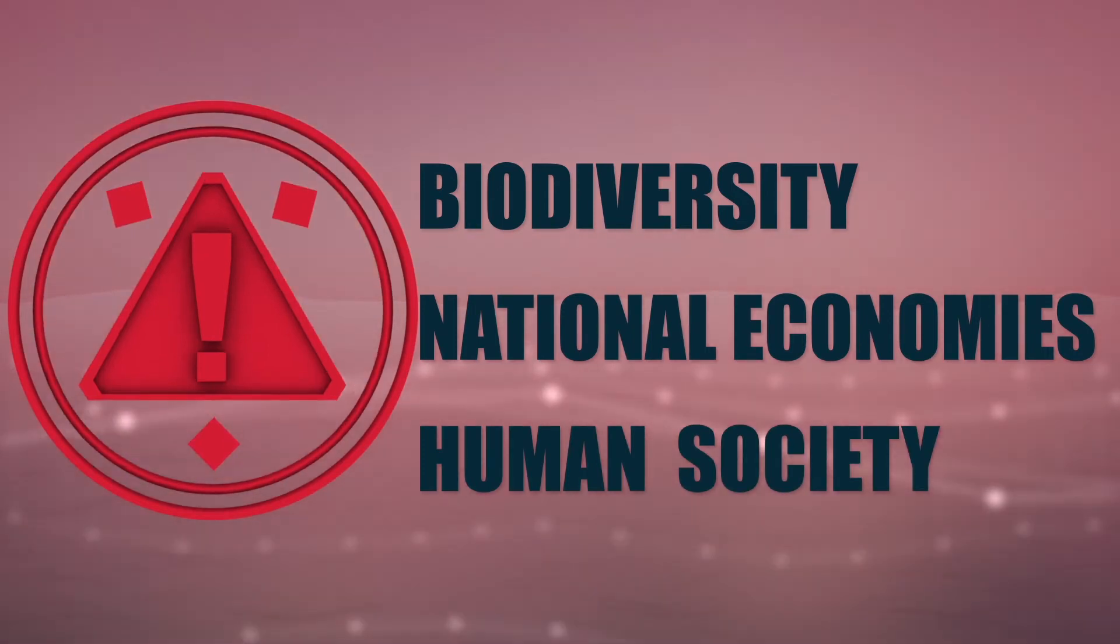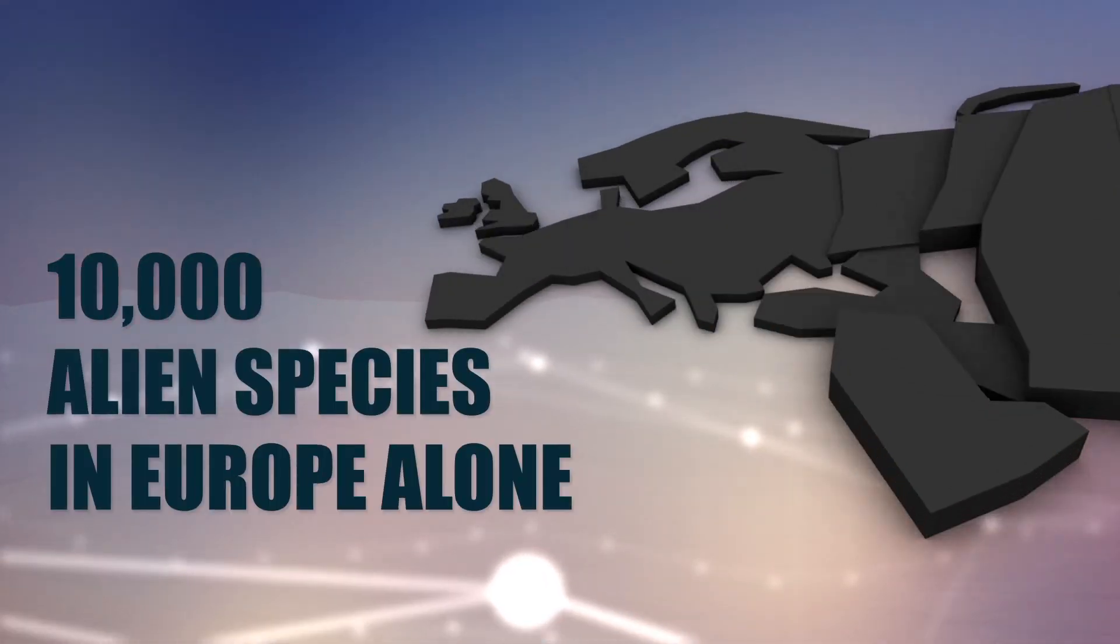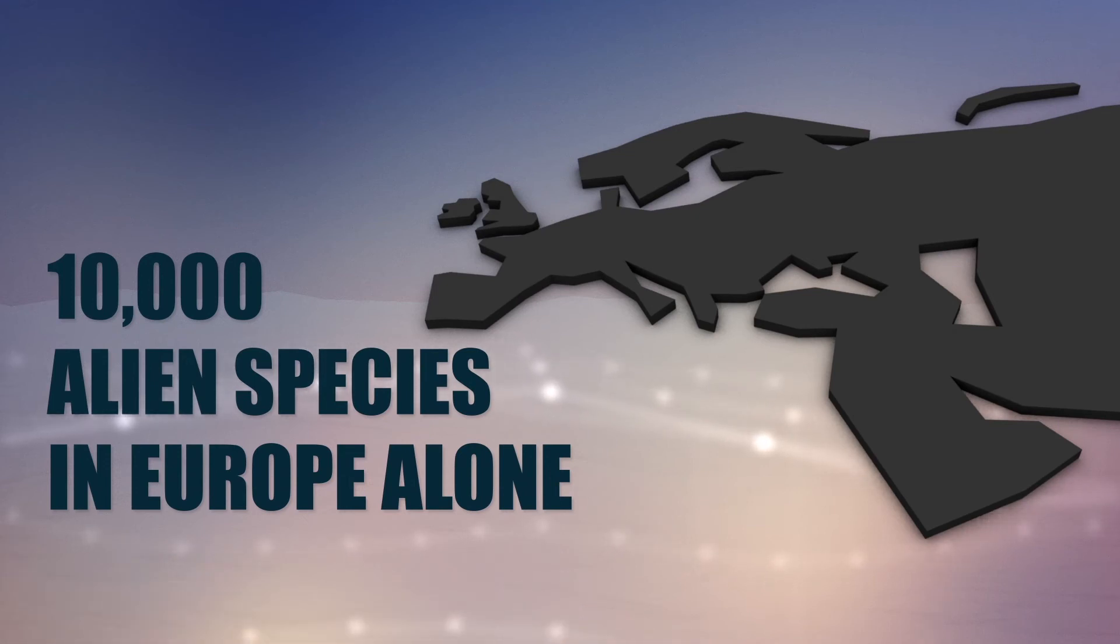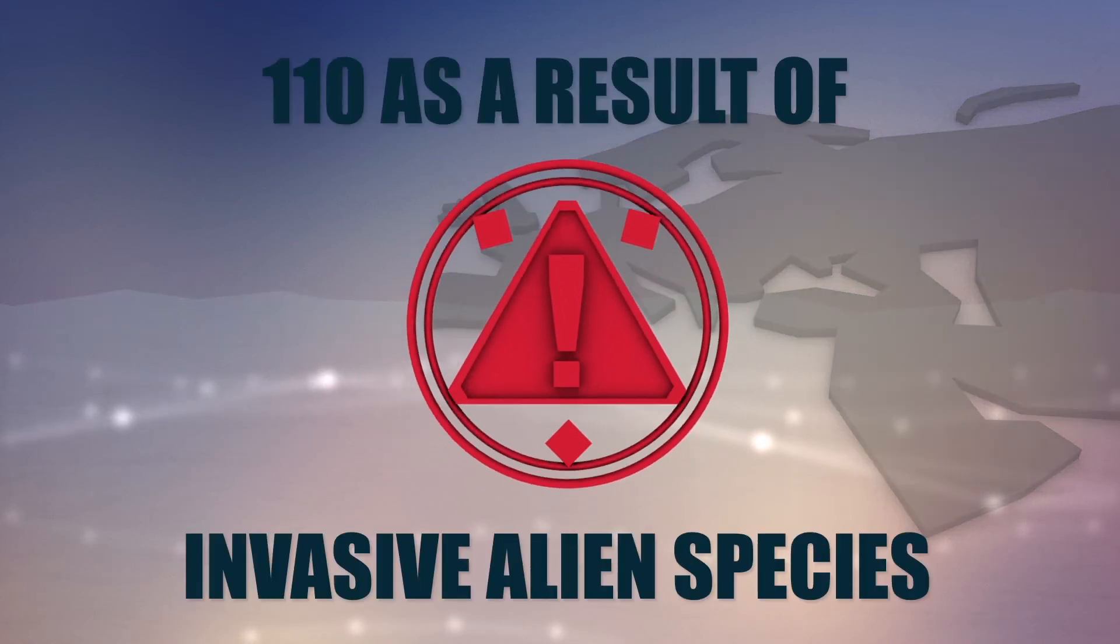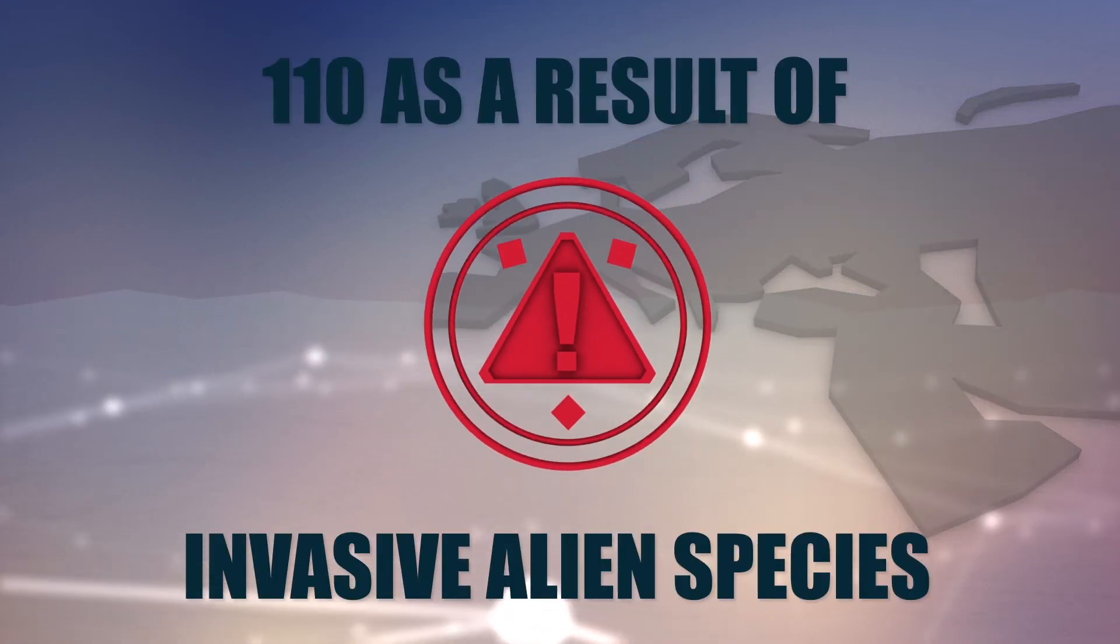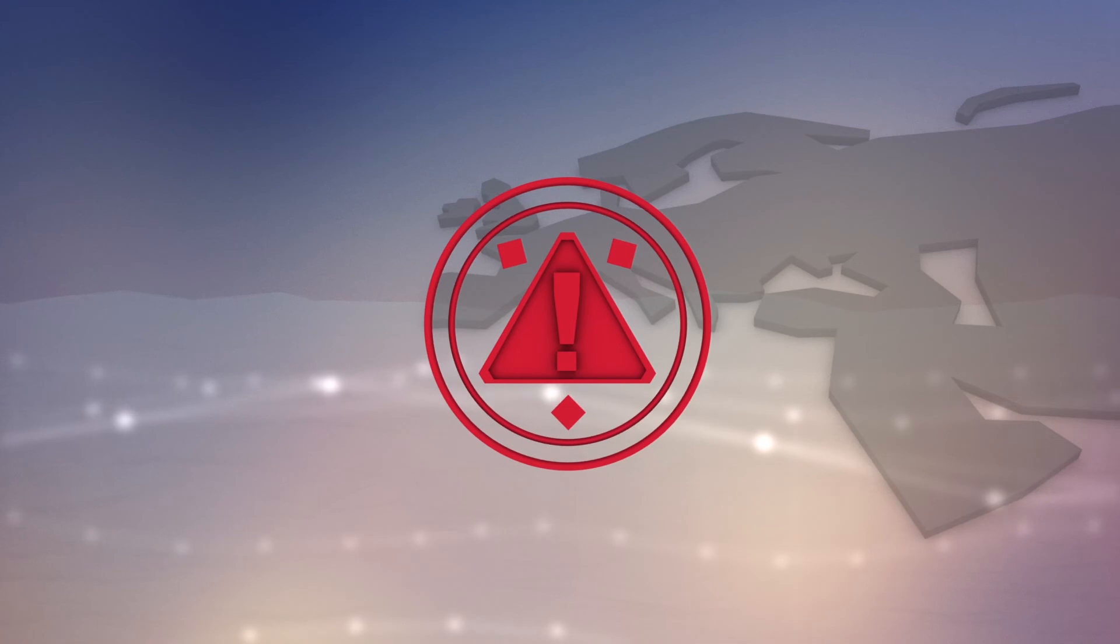There are now over 10,000 alien species in Europe alone. Of the 395 European native species listed as critical, 110 are now in danger as a result of competition from invasive alien species.